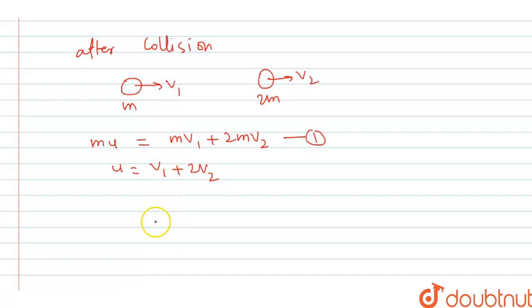Now we have assumed value of e is equal to 1 since it is not given. So e is equal to 1, it means velocity of separation, that is v2 minus v1 upon velocity of approach, that is u minus 0, should be equal to 1.